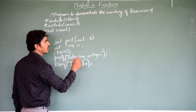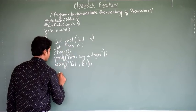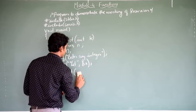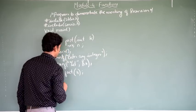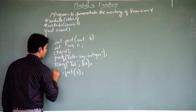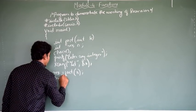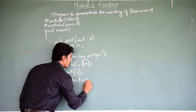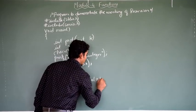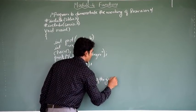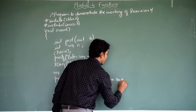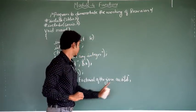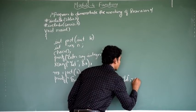Then let me have the function call. The function call is fact(n). Let me assign this to a variable called result. Then I have the print function: "The factorial of the given integer number is %d", result.